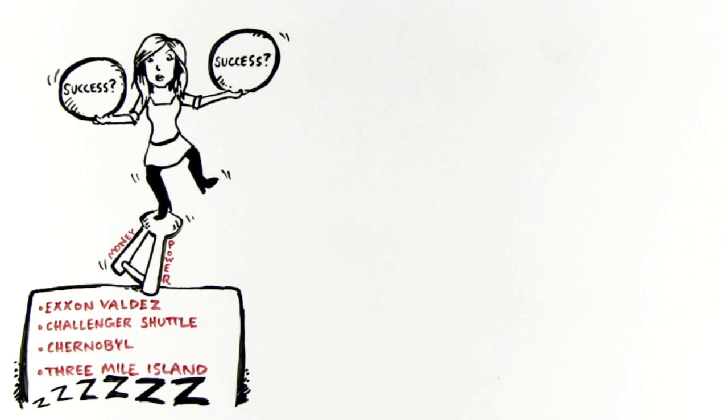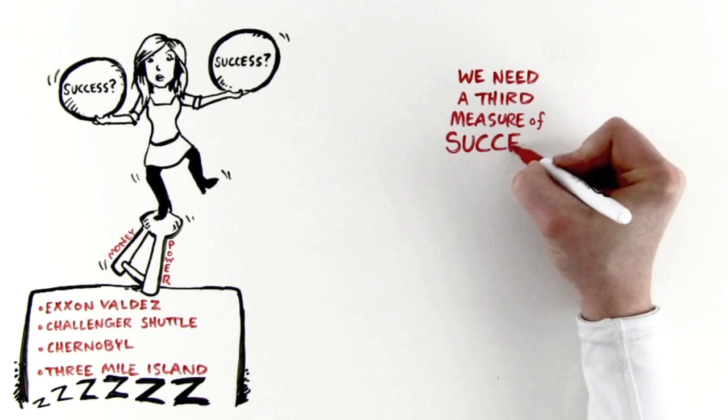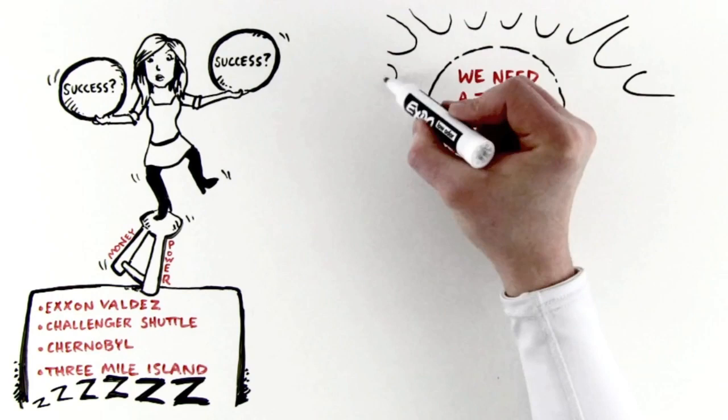When I began to think more deeply about the perils of the way we've defined success as a society, one thing became clear. To live the lives we truly want and deserve, we need a third metric, a third measure of success, one that goes beyond money and power, one that consists of four pillars.